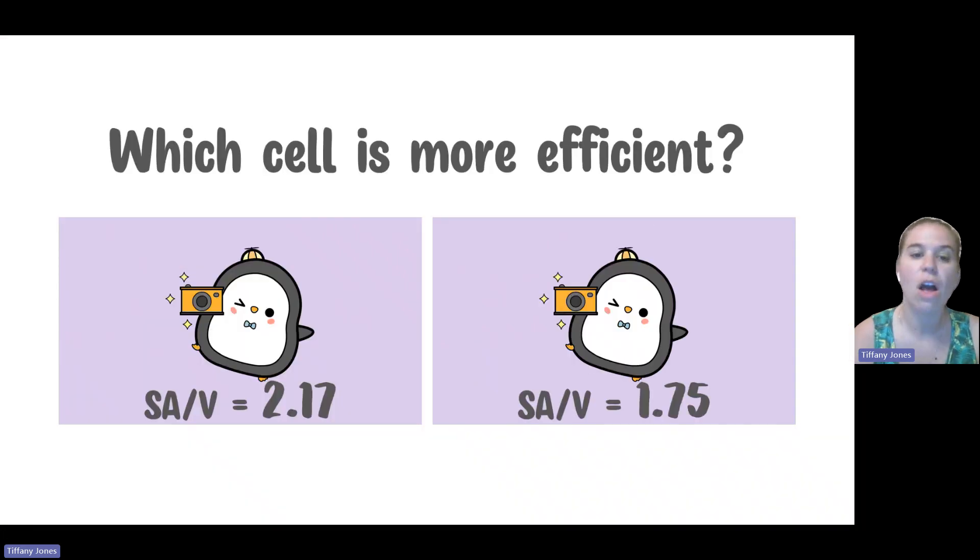The cell that has the larger surface area to volume ratio is more efficient. So the first example that we looked at was the more efficient cell. Hope this helped.